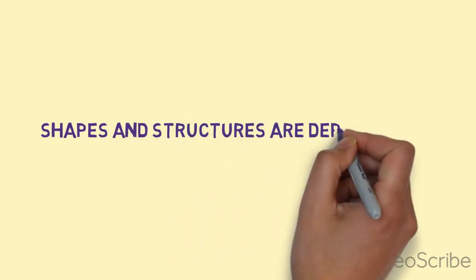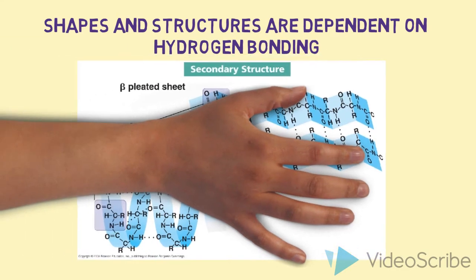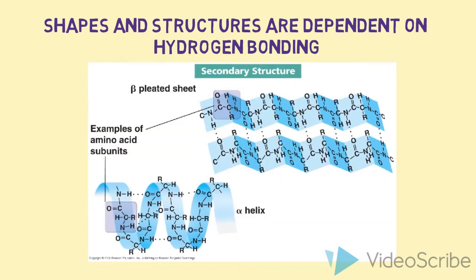The shapes and structures are dependent on hydrogen bonding. As you can see in this photo, the beta-pleated sheets are folding, while the amino acid of the helix does a coil shape, each with hydrogens.